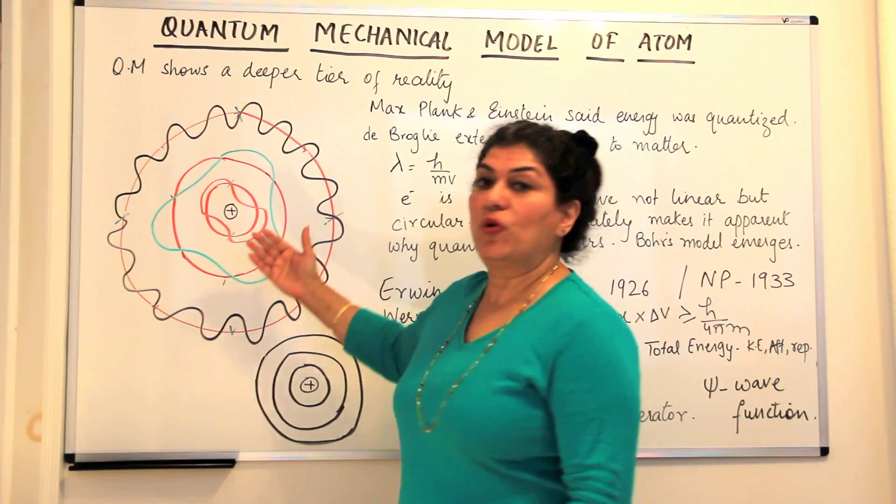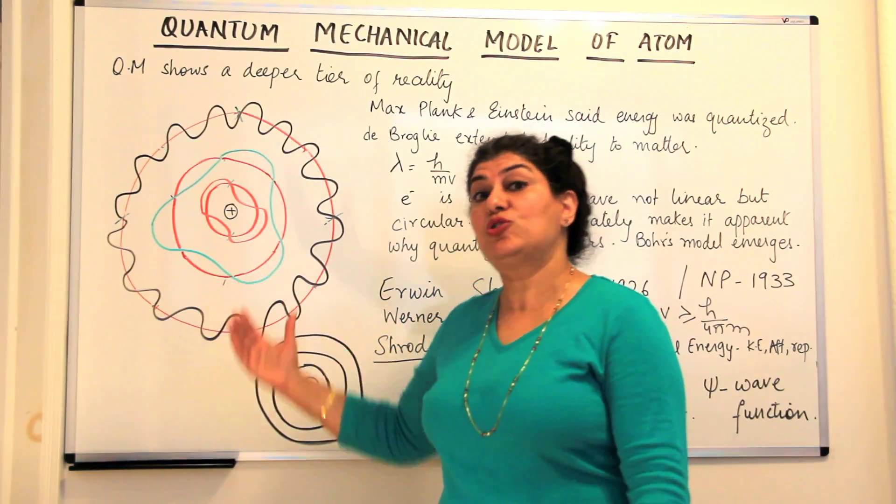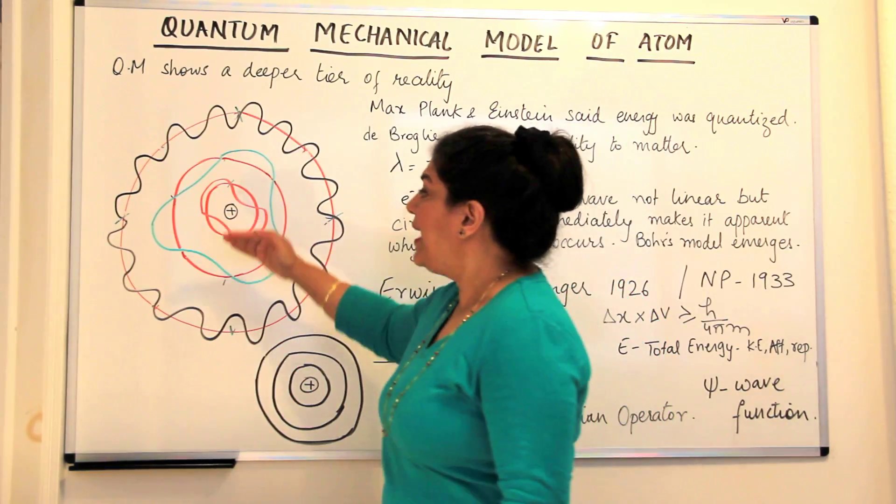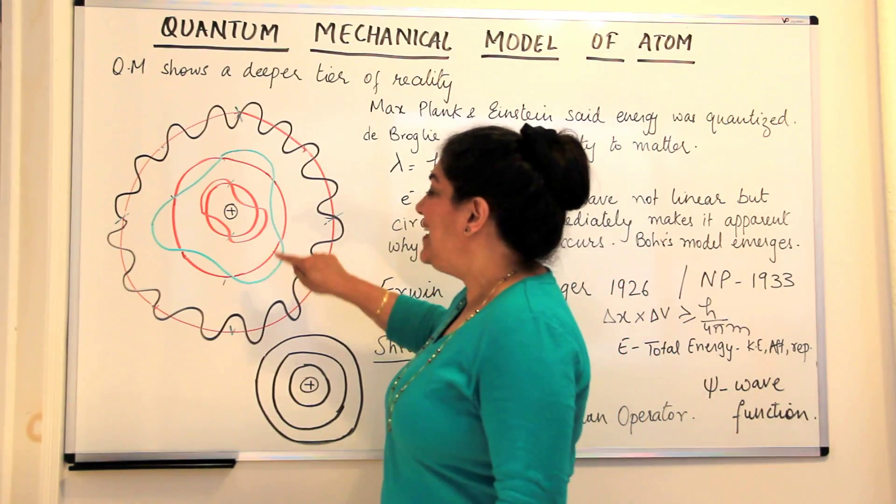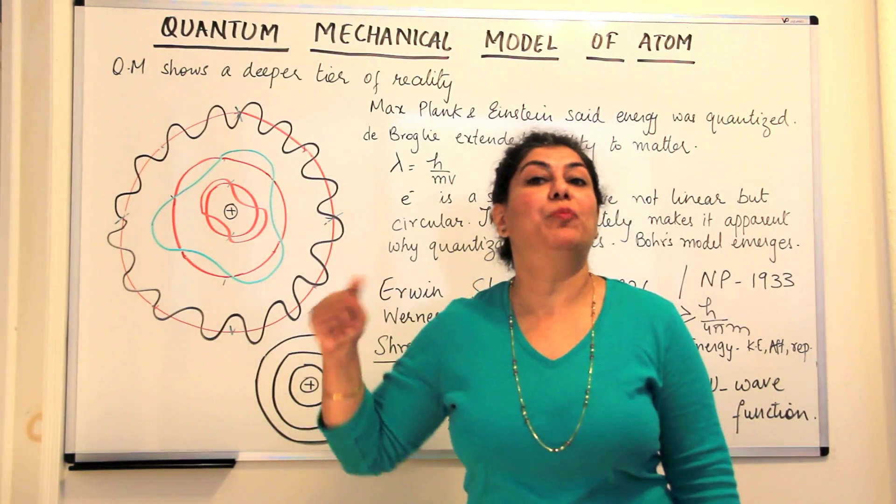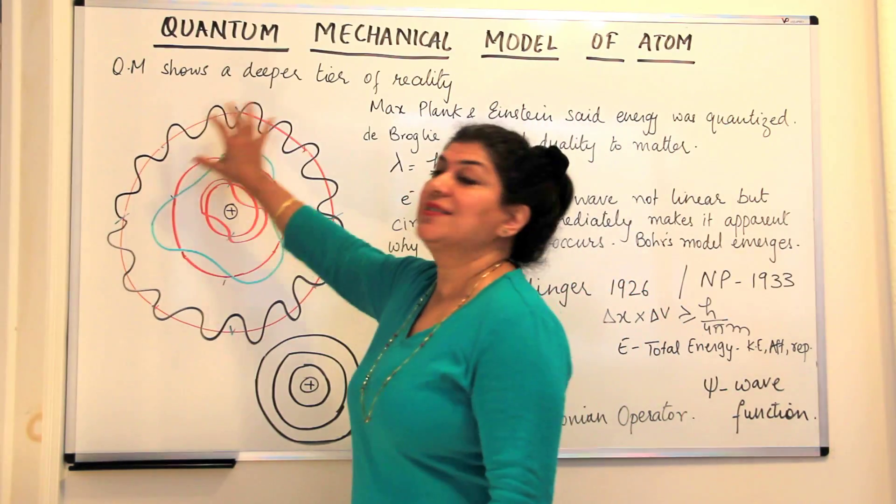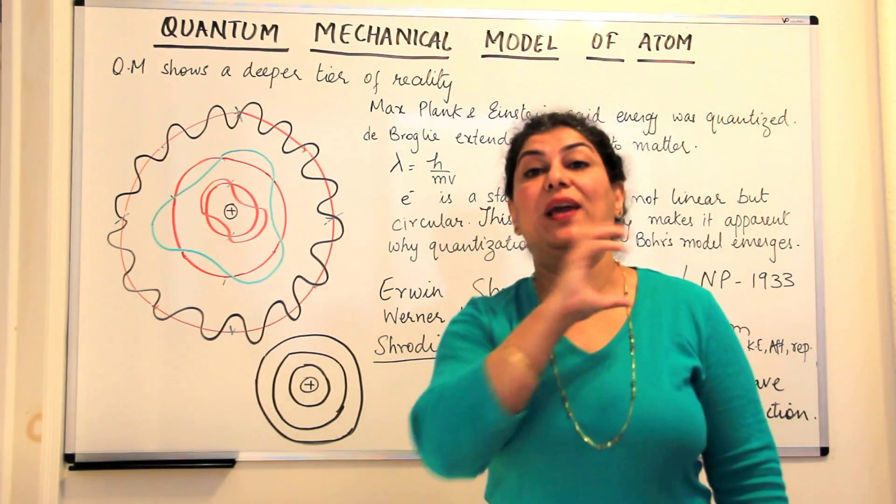So this explains the Bohr's model very clearly and this also explains quantization. Why all energy levels were not possible, because only integer number of wavelengths were possible in order to make a circular standing wave.